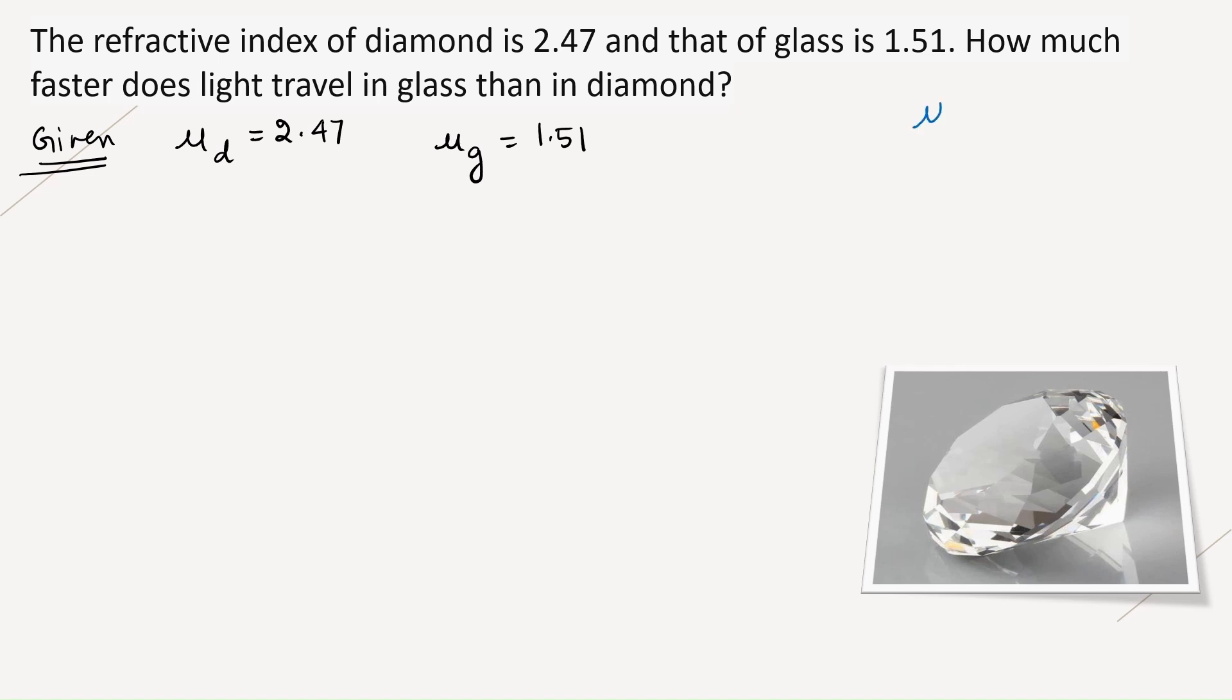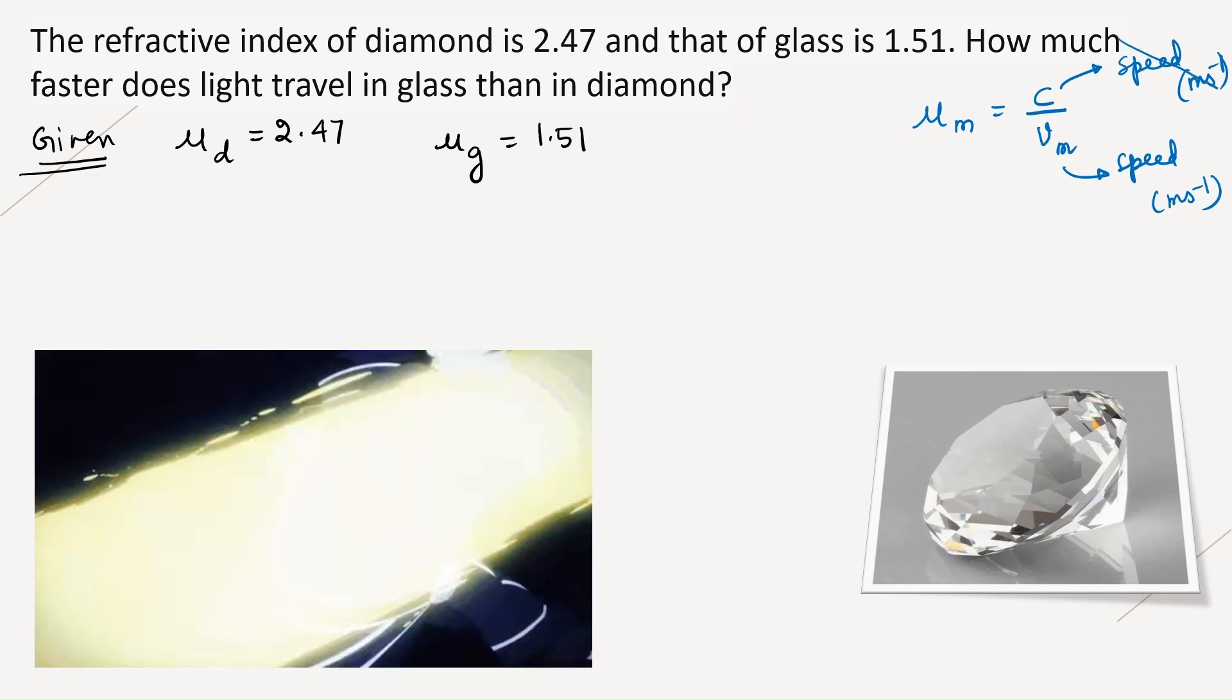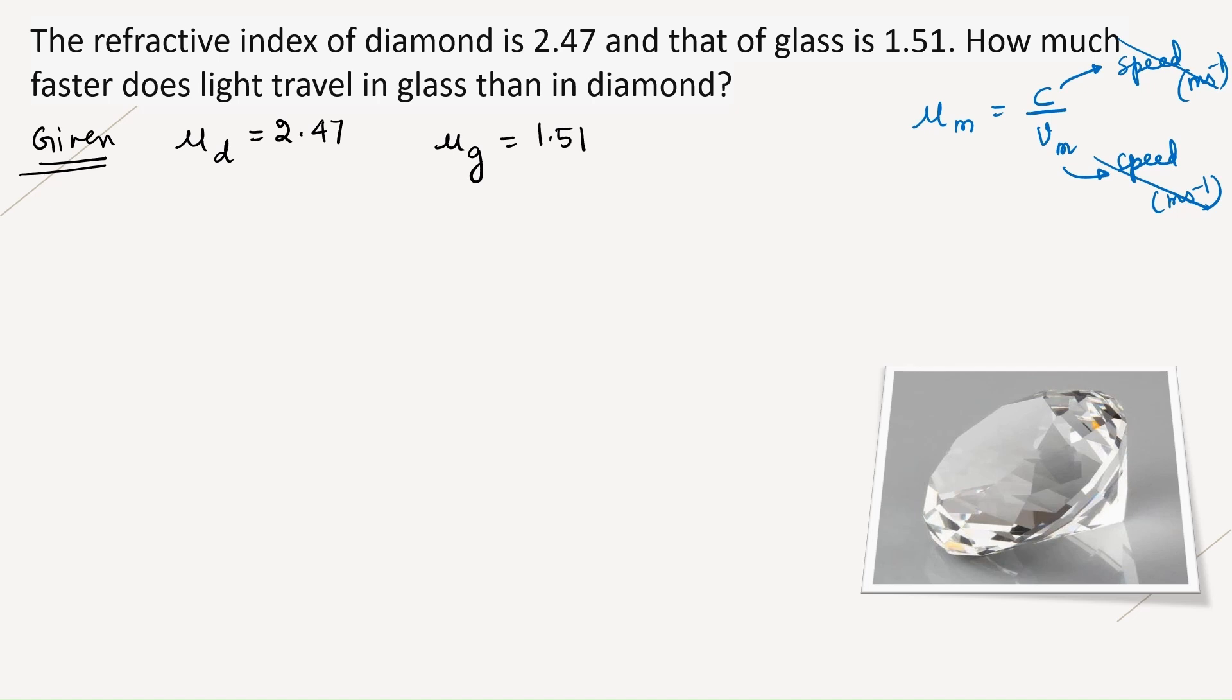Definition of refractive index of a medium is ratio of speed of light in air to speed of light in medium. Its unit will be meter per second and the denominator is also speed with unit meter per second. When you take the ratio of the same quantities, their units get cancelled out. Hence refractive index has no unit. It is just a number which tells us how much the refraction would take place.